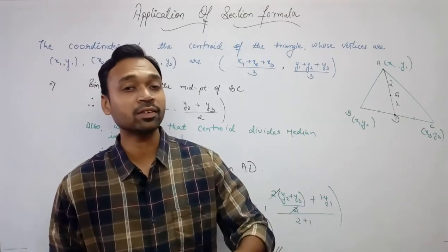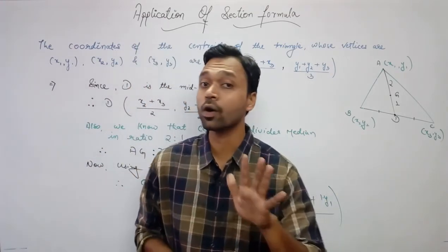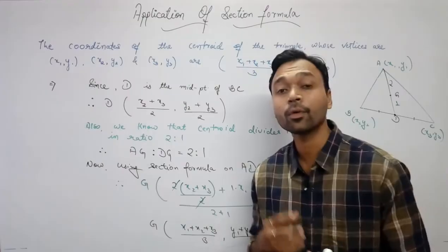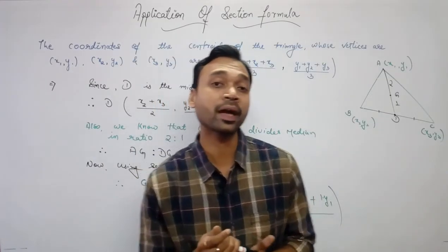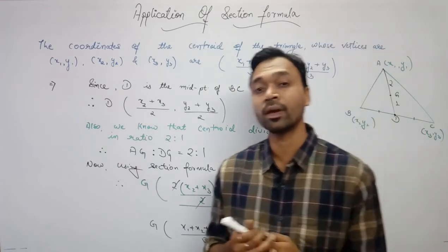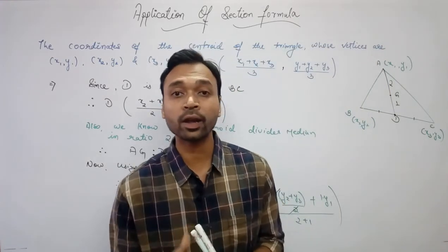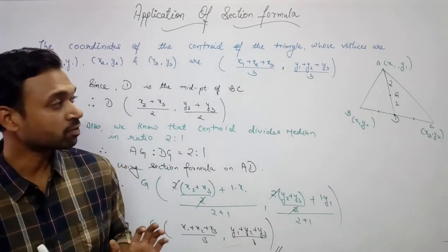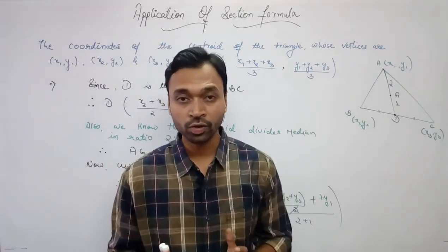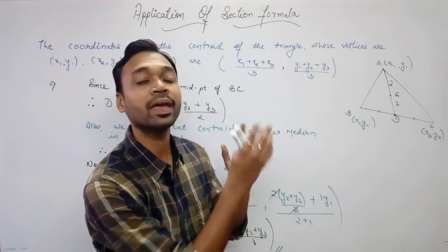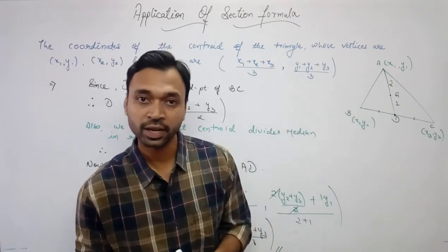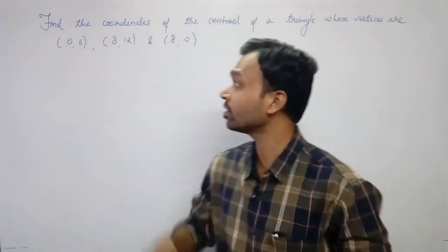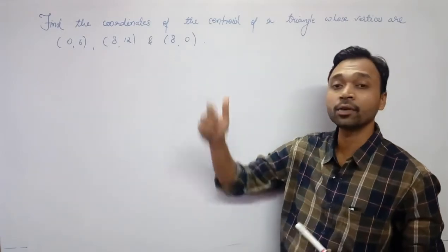It's easy — you just need to remember what a median is, its property, and what property the centroid has. If we are asked for the coordinates of the centroid, we add the respective x-coordinates and divide by 3, and add the respective y-coordinates and divide by 3. Now let's do a question on this application: find the coordinates of the centroid of a triangle whose vertices are (0,6), (8,12) and (8,0).